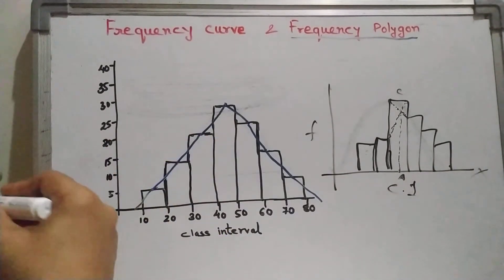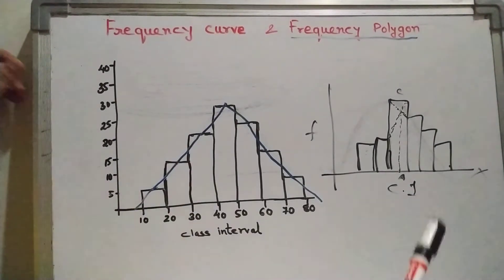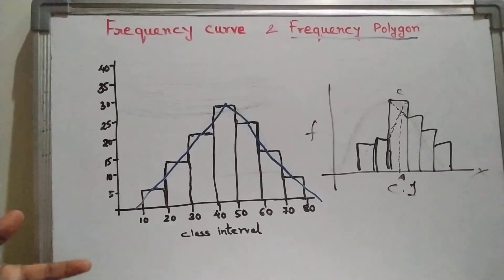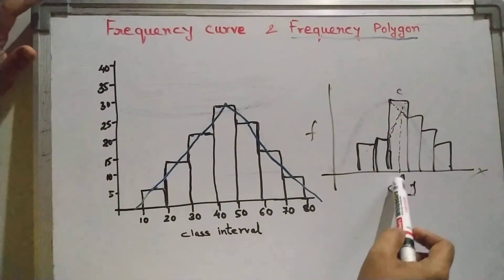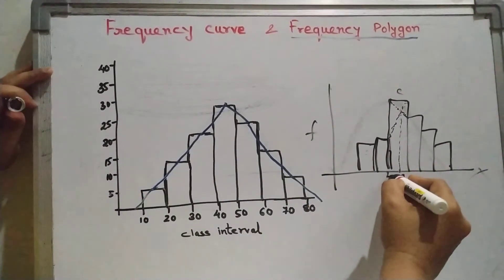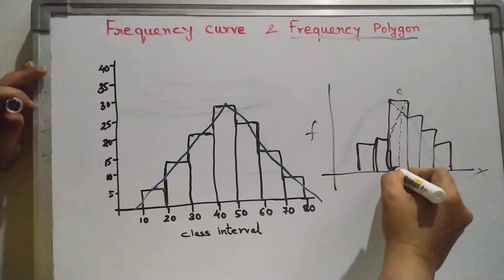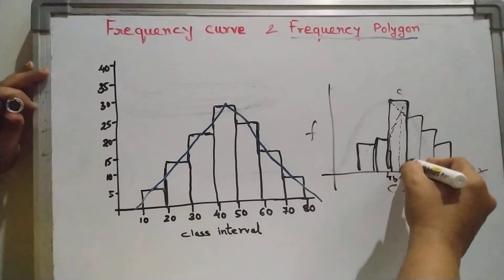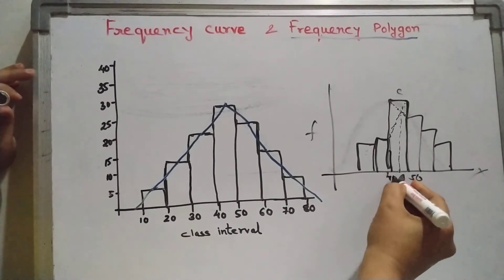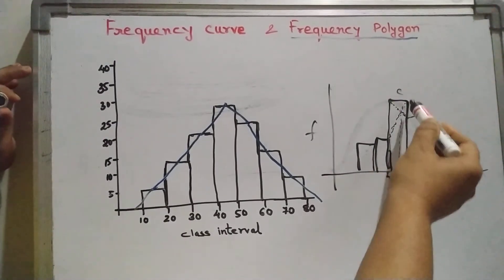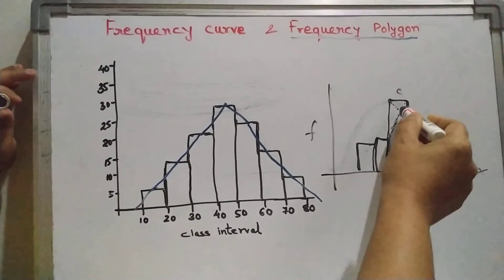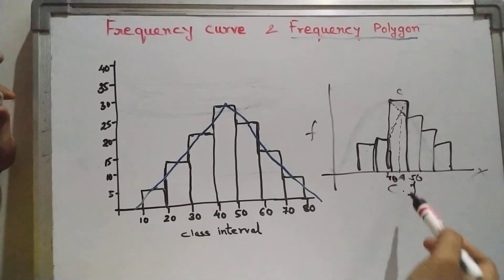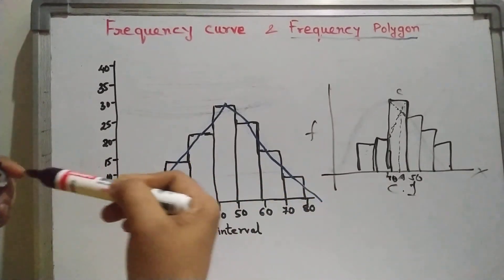We will later study how to find mode mathematically, but graphically we can also find mode. As we know, for a discrete distribution mode is simply the value with the highest frequency. But for a continuous distribution, if the highest frequency lies in a class like 40 to 50, that is our modal class, and we need to find the exact value of mode. Graphically we find it by drawing diagonals to the adjacent bars, and from the intersection point drawing a perpendicular to the x-axis — where it cuts is the mode value.